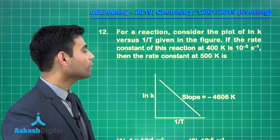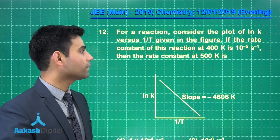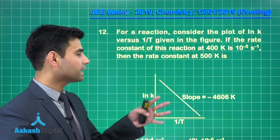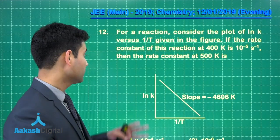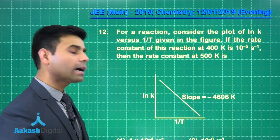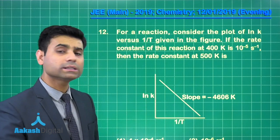This is the next question we have which says, for a reaction, consider the plot of natural log K versus 1 upon T given in the figure. If the rate constant of this reaction at 400 Kelvin is 10 to the power minus 5 second inverse, then the rate constant at 500 Kelvin is. This is the graph given, ln K versus 1 upon T. The slope is minus 4606 Kelvin.